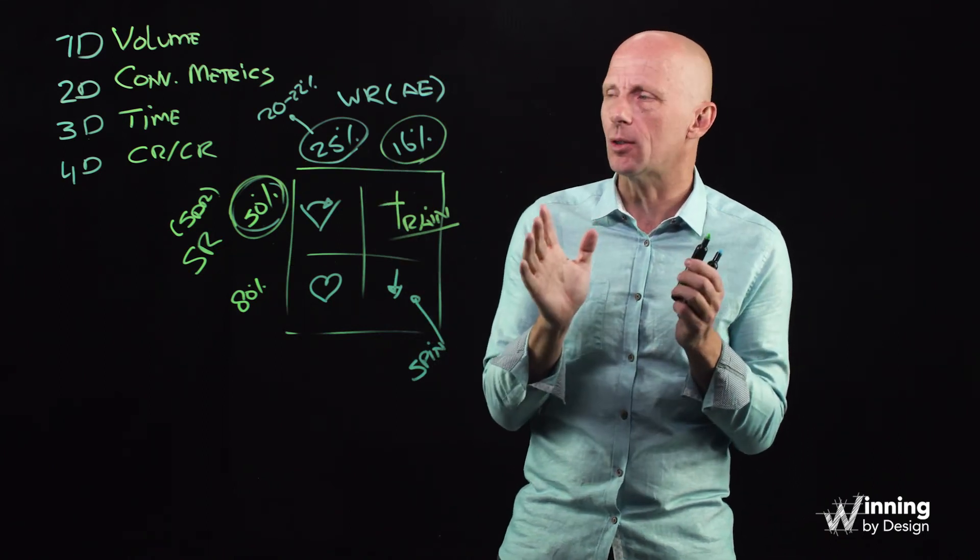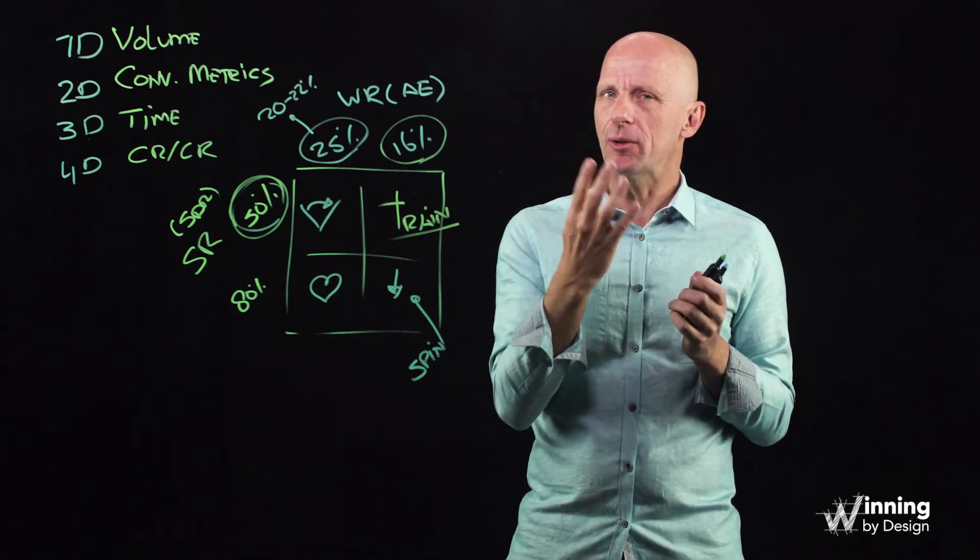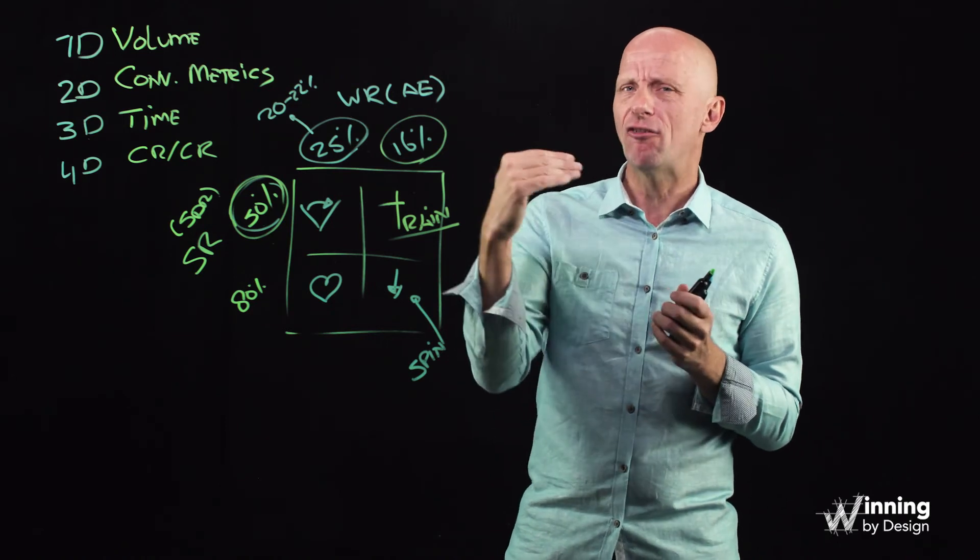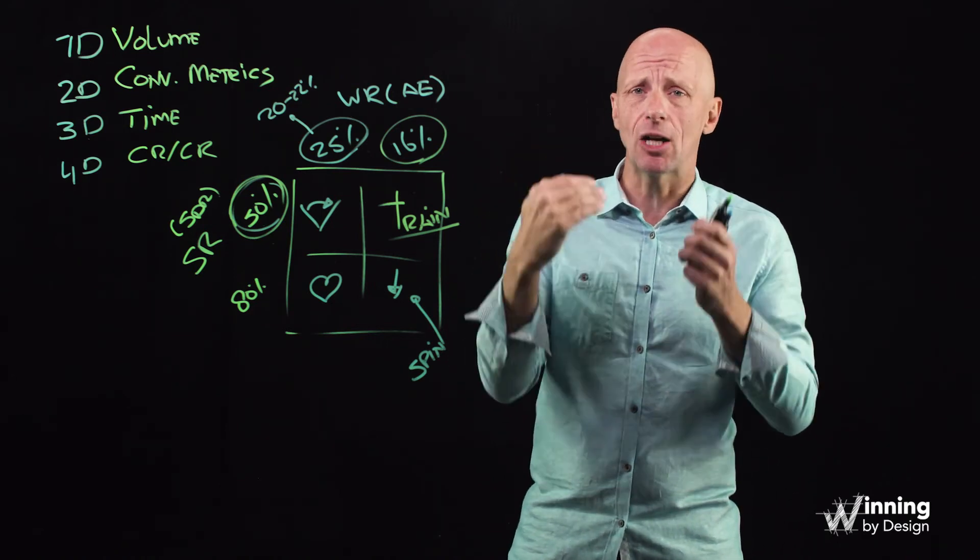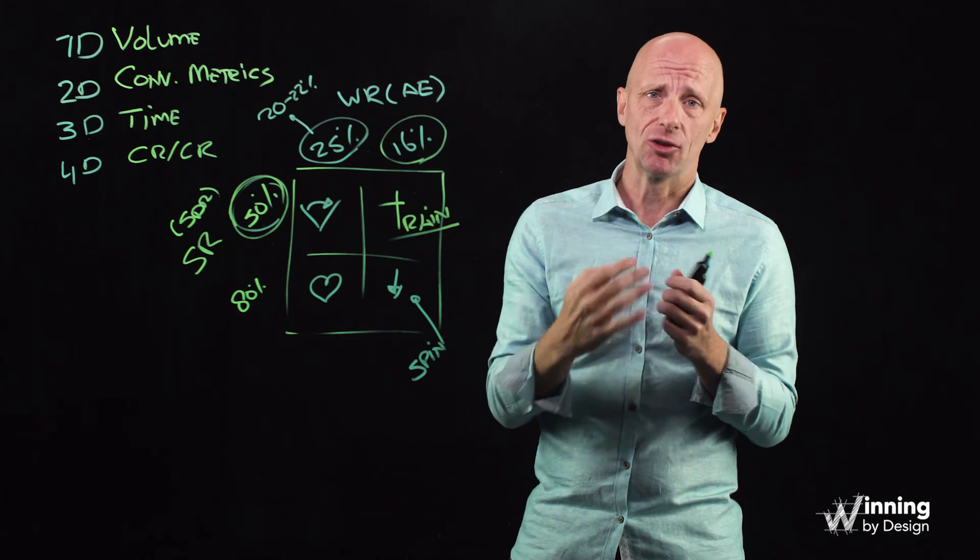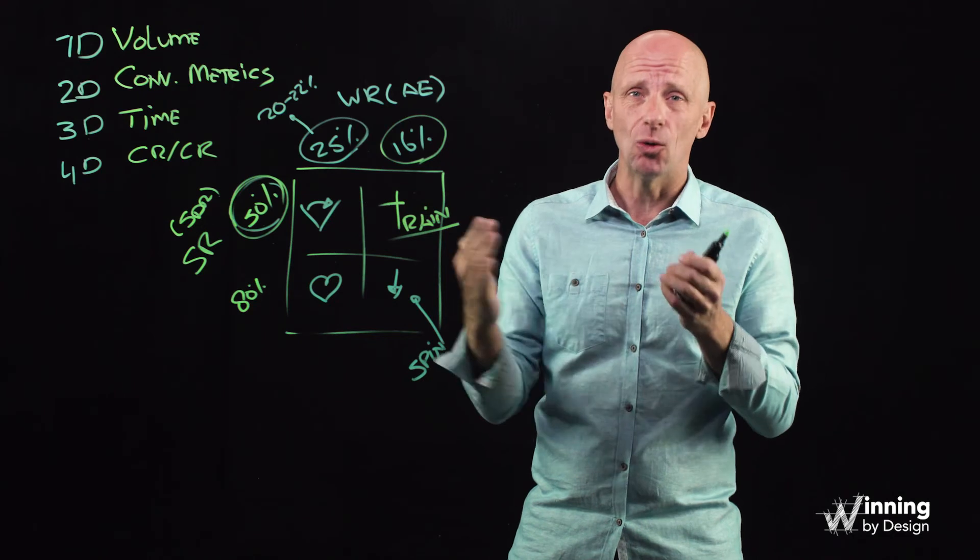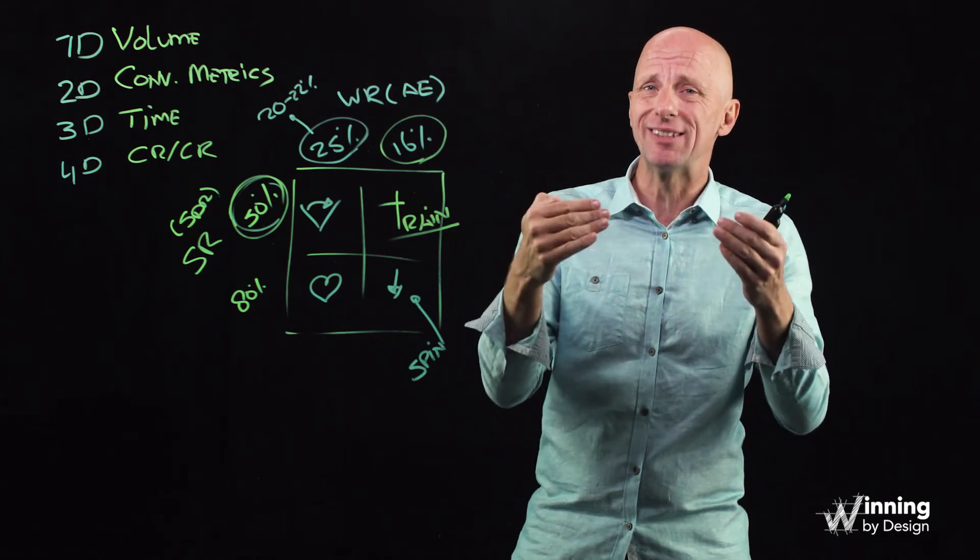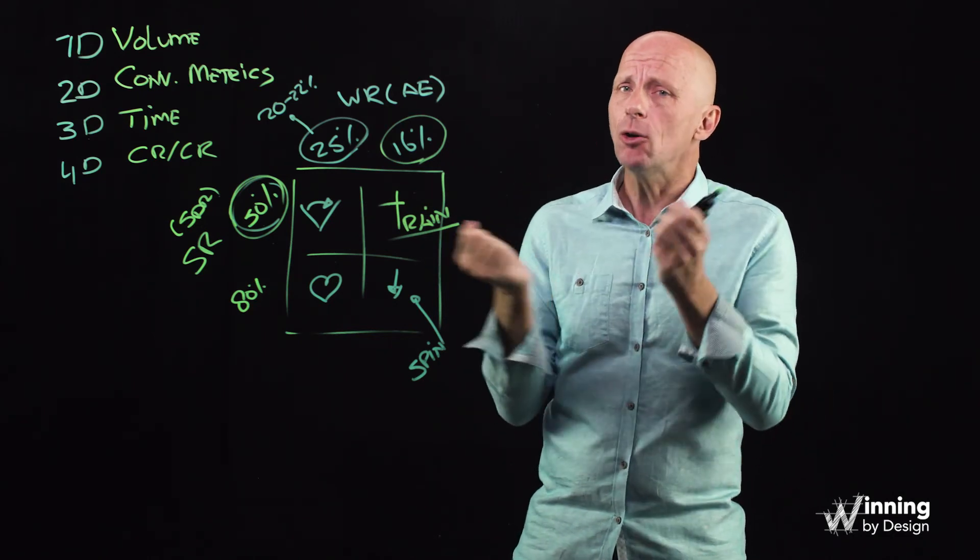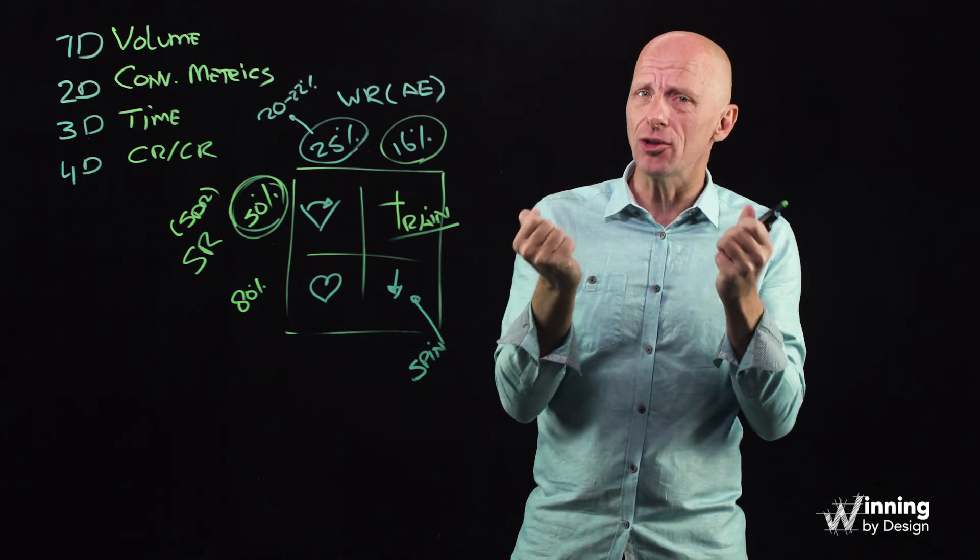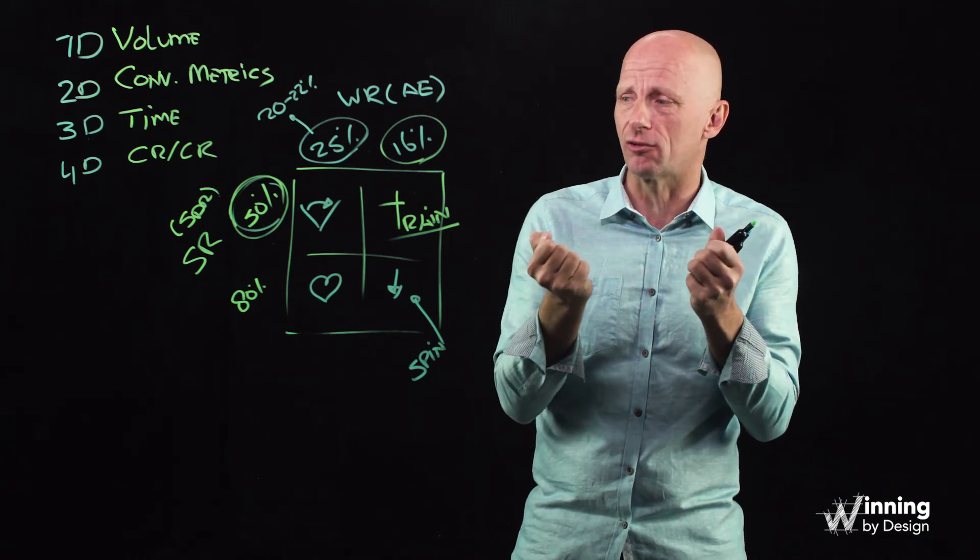Now, what you see down here, what I've just done is there's four different metrics, four different dimensions. Volume metrics. How many MQLs, how many leads? Two-dimensional, conversion rate. How many leads does it take to win a deal? Three-dimensional, what is the trend over time? Are we improving? And then fourth-dimensional, how do we compare two conversion rates against each other and what can we learn from that?